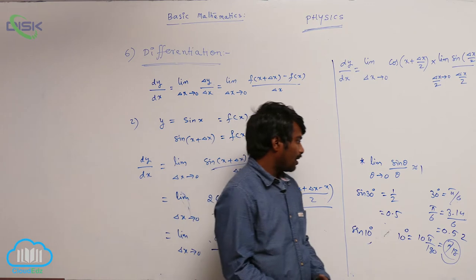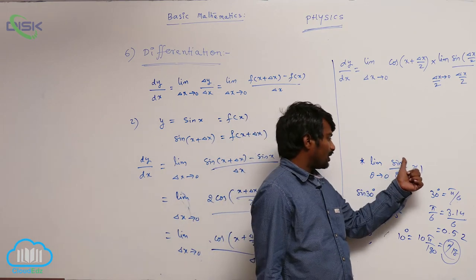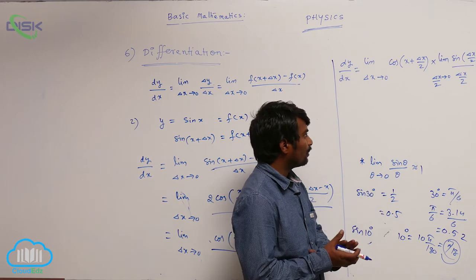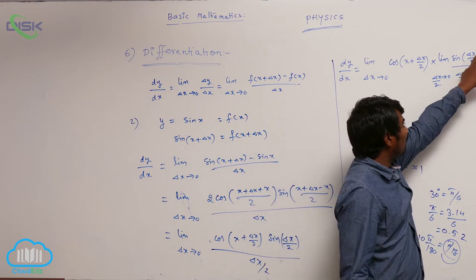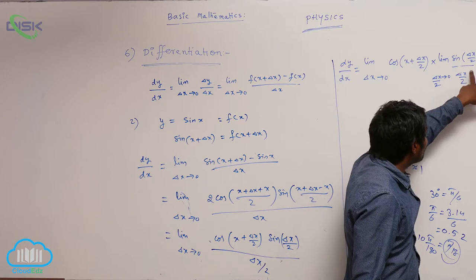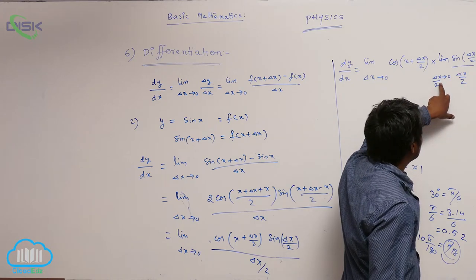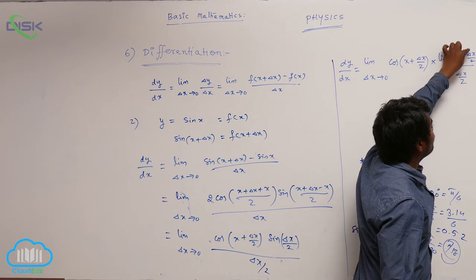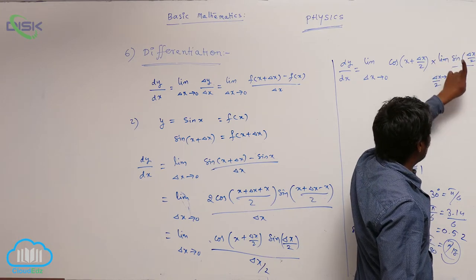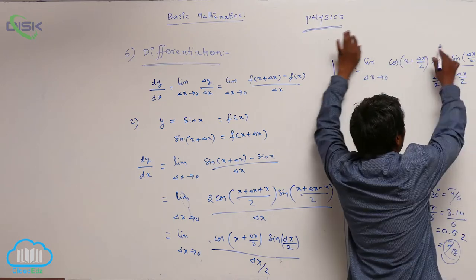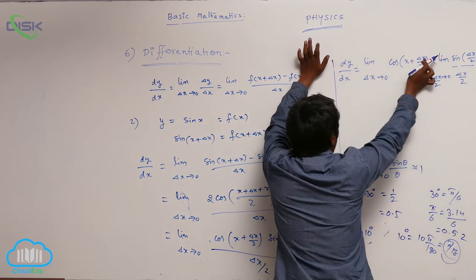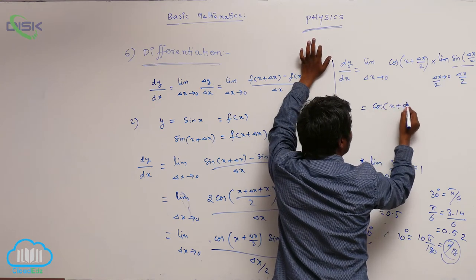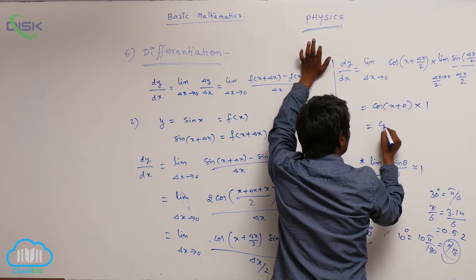That means I can take sin theta as theta itself, so theta by theta is 1. In the same way, here theta tends to 0. Here sin of (delta x by 2), divided by (delta x by 2) — delta x by 2 tends to 0 — so sin of (delta x by 2) can be taken as (delta x by 2); (delta x/2) divided by (delta x/2) is 1. So this total term will be 1. And wherever delta x is there, you substitute 0.